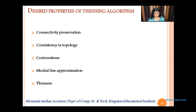What are the desired properties of the thinning algorithm? It should have connectivity preservation, consistency in topology, centeredness, major line approximation, thinness, and minimal boundary noise.